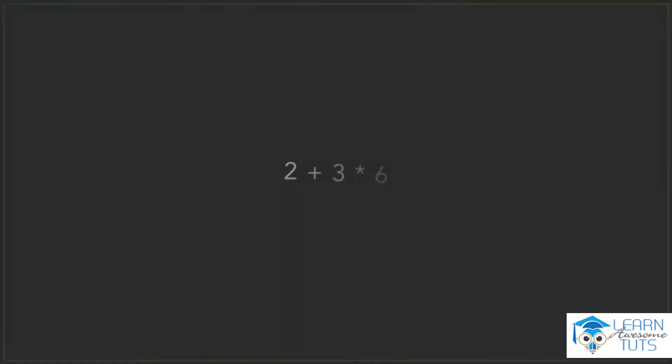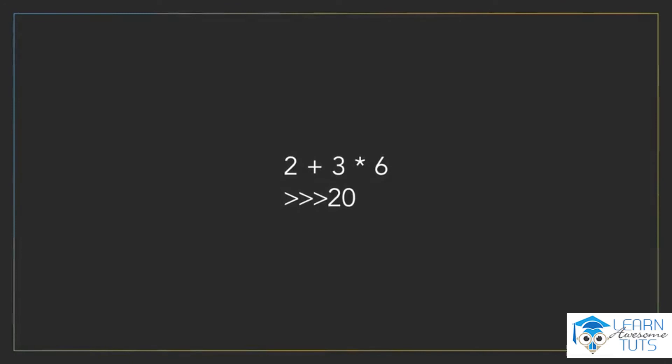It's important to keep the order of operations in mind, as your program could behave unexpectedly based on how an expression is evaluated. If we go back to our last expression, it evaluated to 20 because of the order of operations. But what if we, as the programmer, wanted it to process the addition first? In that case, we would add parentheses around our addition operation, and then we would get the result that we wanted, 30.